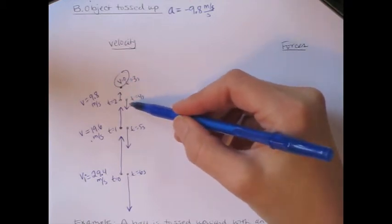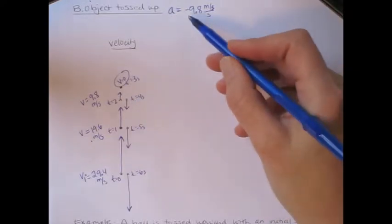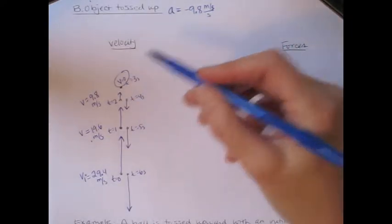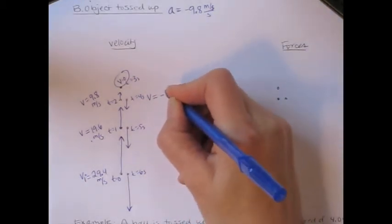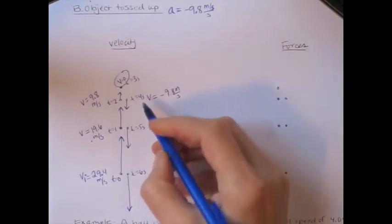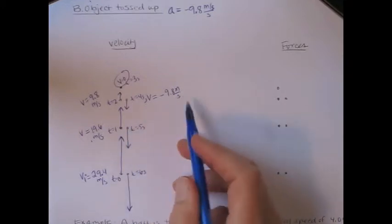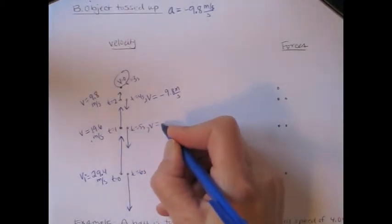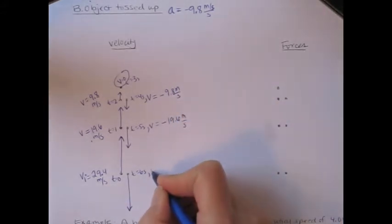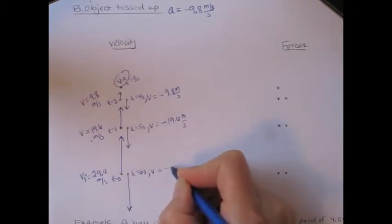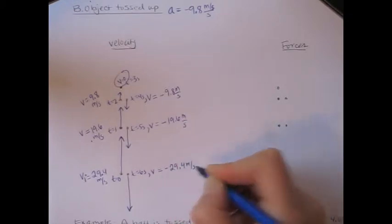Then on the way down, from three to four seconds, we have another change of negative 9.8. Starting at zero and changing by negative 9.8 meters per second gives a velocity of negative 9.8 meters per second at four seconds. After another second, the velocity changes by another negative 9.8, giving negative 19.6. And after another second, changing by another negative 9.8, we have negative 29.4 meters per second.